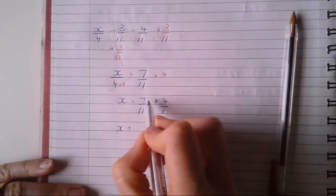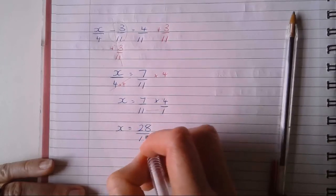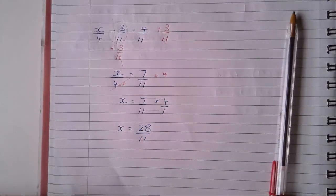So now I have four times, seven times four, 28. Eleven times one is 11. And that's my final fraction.